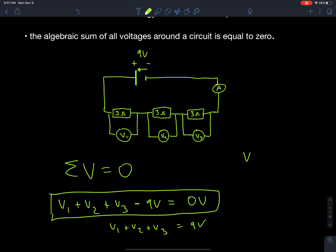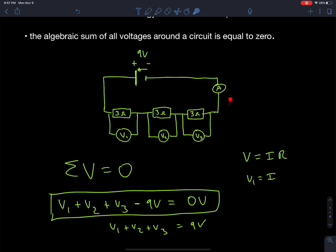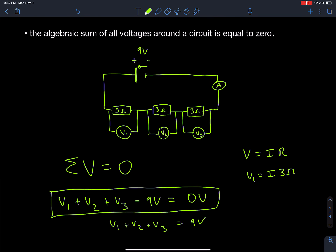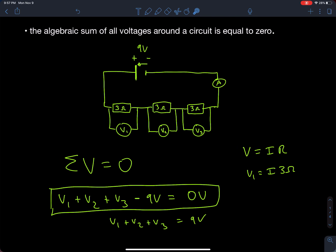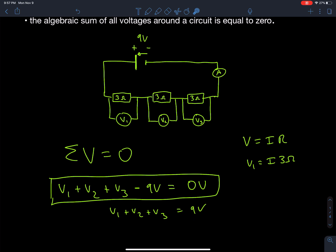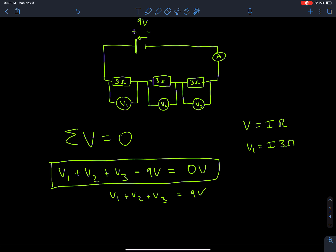Now, what is V in a circuit? V is governed by Ohm's law: the voltage across a component equals the current through that component times its resistance. So V1 equals the total circuit current I times 3 ohms, V2 equals I times 3 ohms, and V3 equals I times 3 ohms. Substituting into the KVL equation gives: I(3Ω) + I(3Ω) + I(3Ω) = 9 volts.